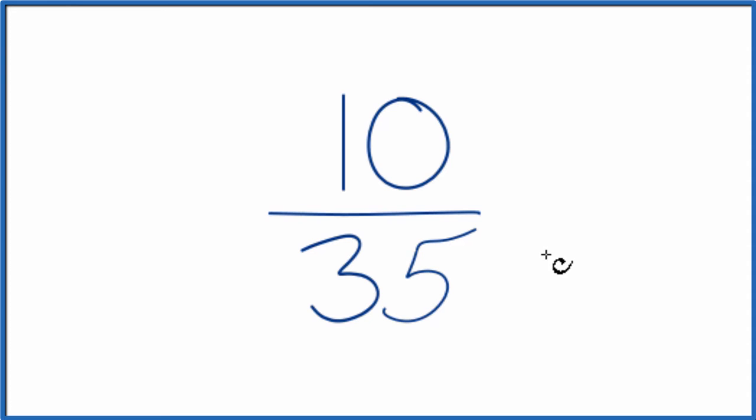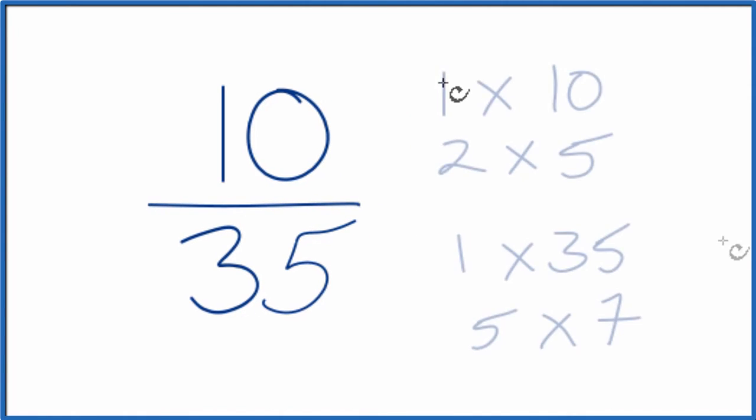To do that, we need to find a common factor. So let's write the factors for 10 and 35. So as we look at the factors for 10 and 35, the greatest common factor is 5.